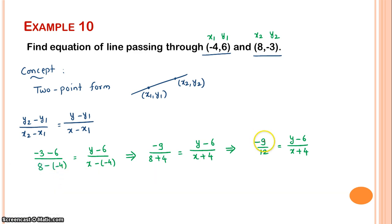Cross multiplication: -3(x + 4) = 4(y - 6). Expanding: -3x - 12 = 4y - 24. Rearranging: 0 = 3x + 4y - 24 + 12, so 3x + 4y - 12 = 0. This is your equation of line.